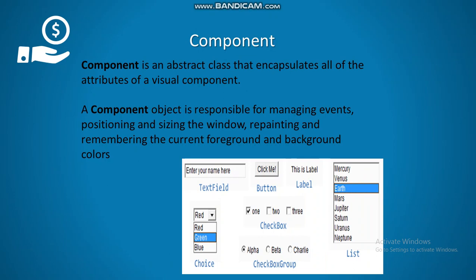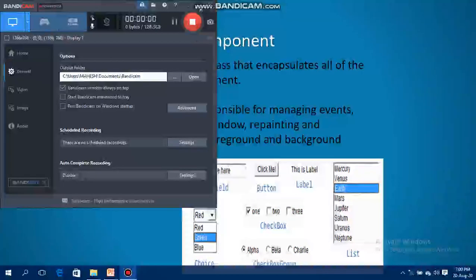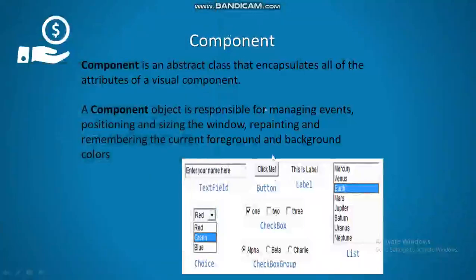A component object is responsible for managing events, positioning and sizing the window, and repainting and remembering the current foreground and background colors. The components — text field, button, label, checkbox, list, checkbox group, choice — are all subclasses of the component class.